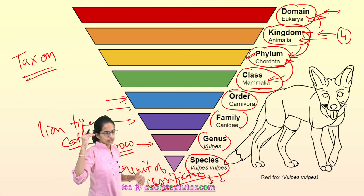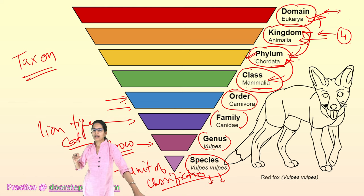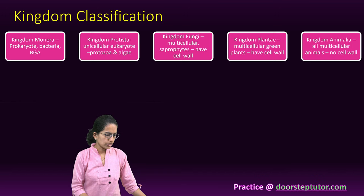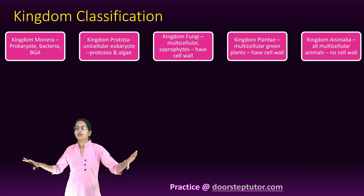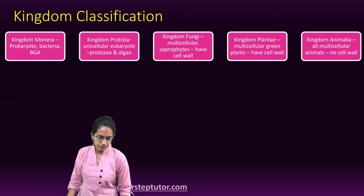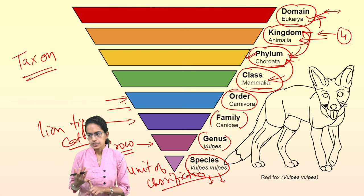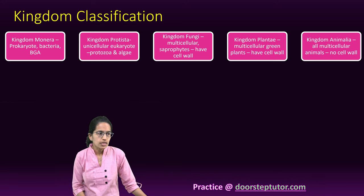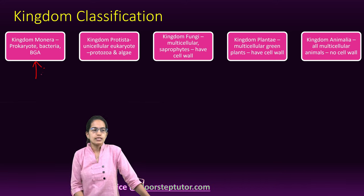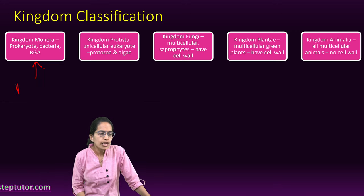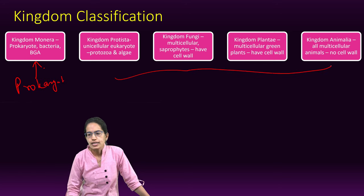The hierarchy from highest to lowest is: domain, kingdom, phylum, class, order, family, genus and species. The five kingdom classification was proposed by Whittaker. Whittaker's five kingdom classification is very important and is based on cell structure. The five kingdoms are Monera, Protista, Fungi, Plantae and Animalia. Monera belongs to prokaryotes. Protista, Fungi, Plantae and Animalia are eukaryotes.